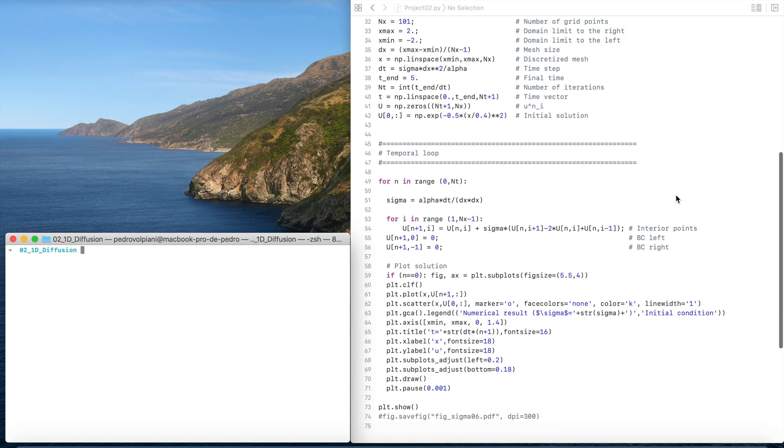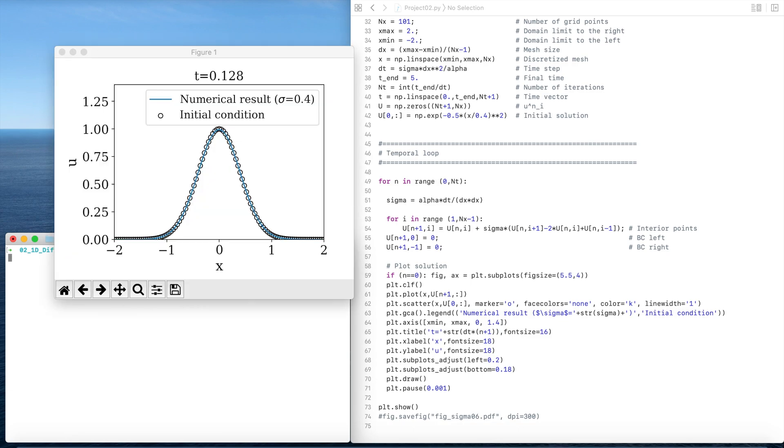We solve the diffusion problem here. We apply the boundary conditions and then we plot the solution. Let's see if the code is working. It is running. Great!